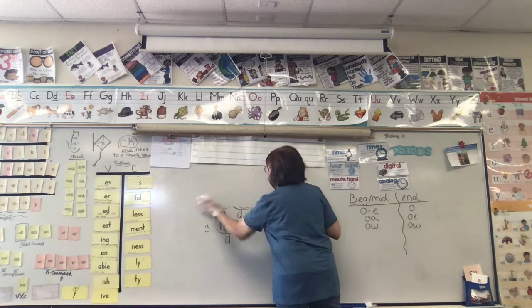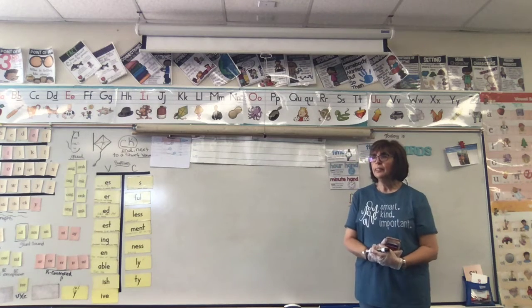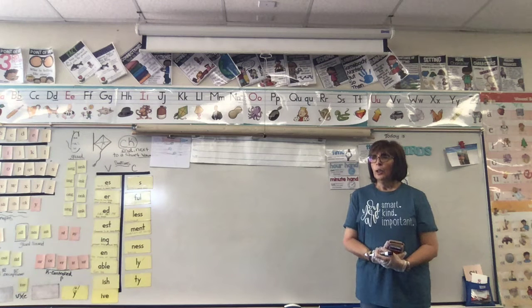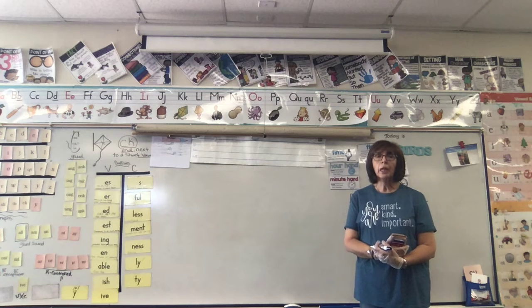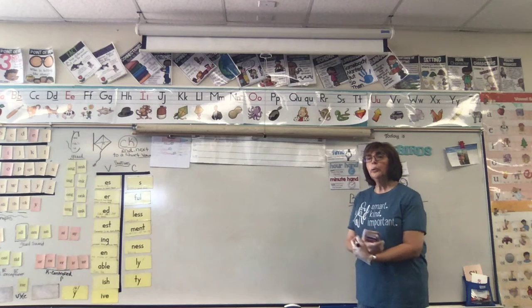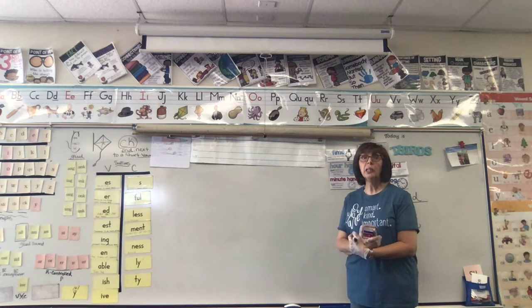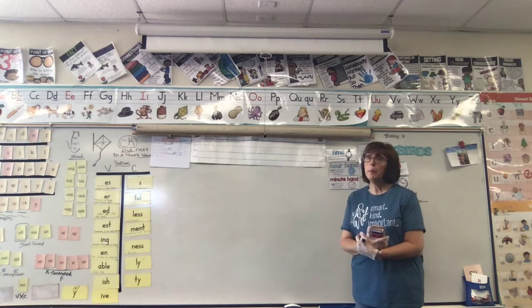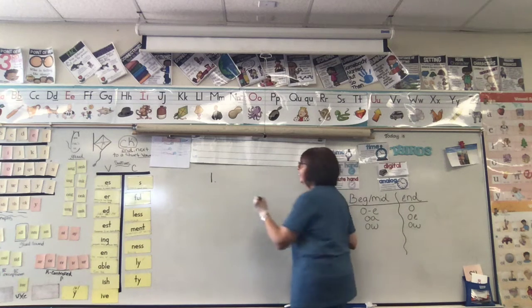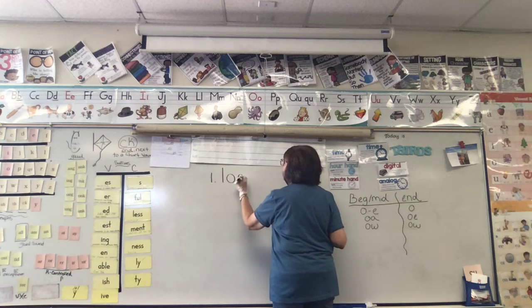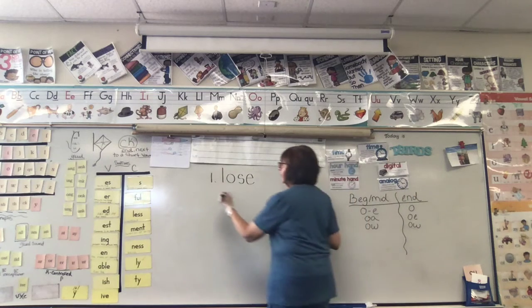Now we're on to trick words. And we're not going to be tricked by those trick words. Trick word number one. Lose. Let's try not to lose the basketball game. Now remember we don't mark trick words. And I'm going to tell you a secret. A lot of people spell this incorrectly. Adults as well. So you don't want to be tricked by this trick word. Here we go. L-O-S-E. Awesome, guys. You didn't get tricked.